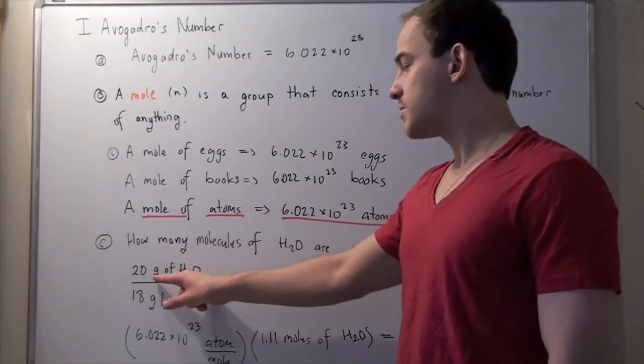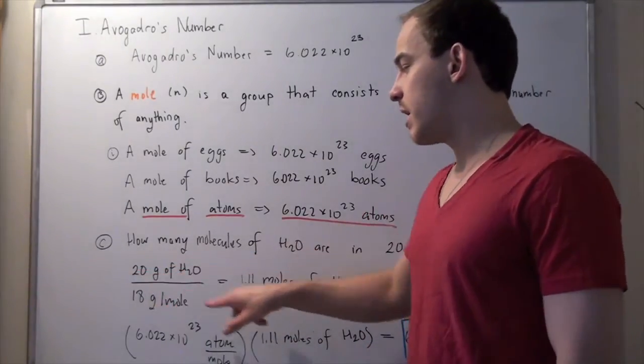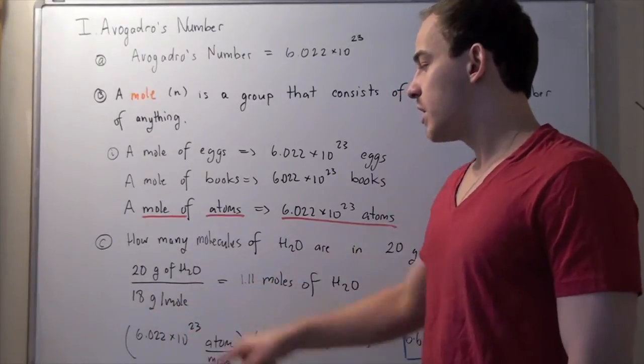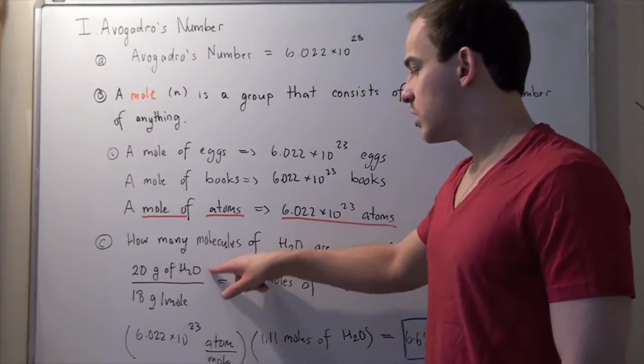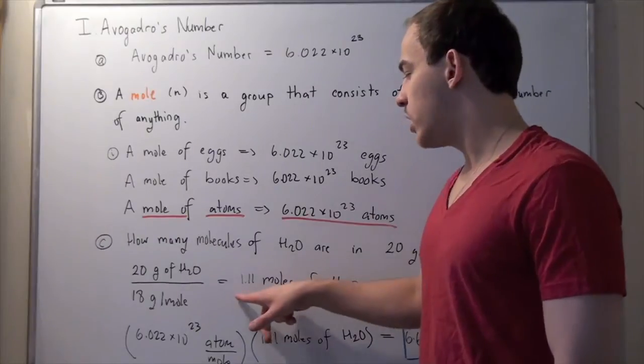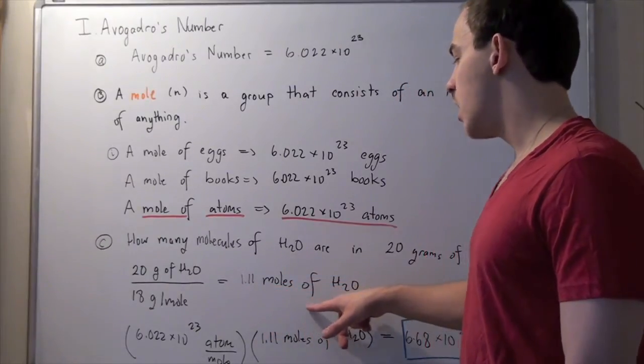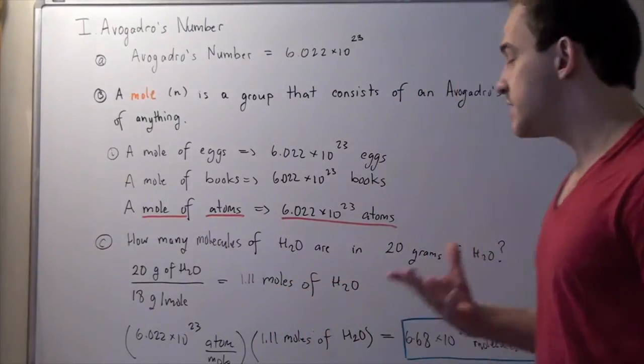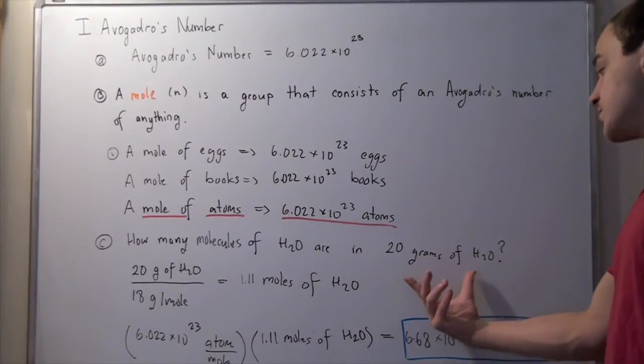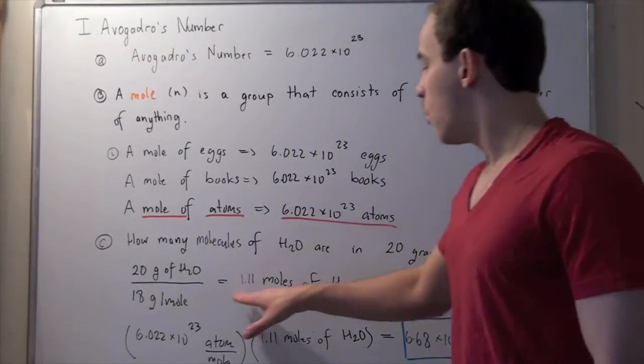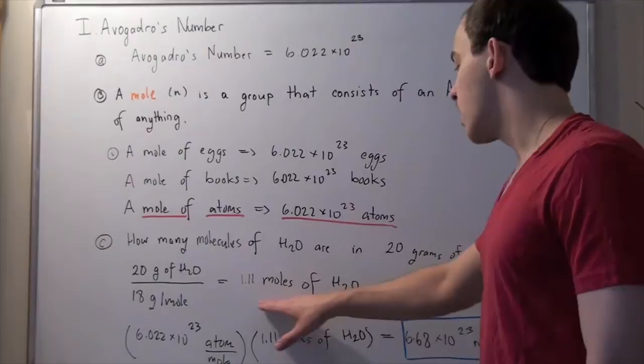So 20 grams of water divided by 18 grams per mole, we see that the grams cancel, the moles go on top, and we get 1.11 moles of water. This means within our 20 grams of water, there are 1.11 moles of water.